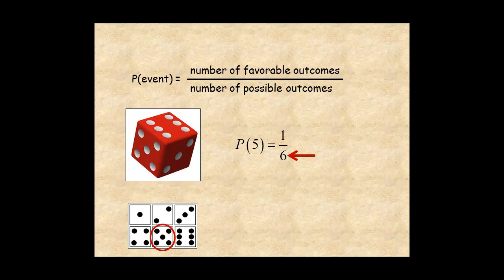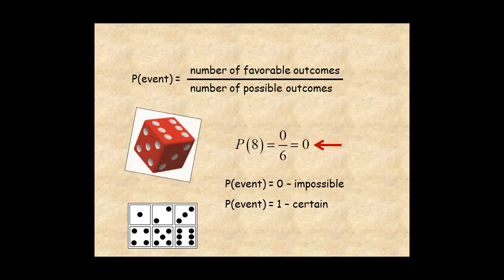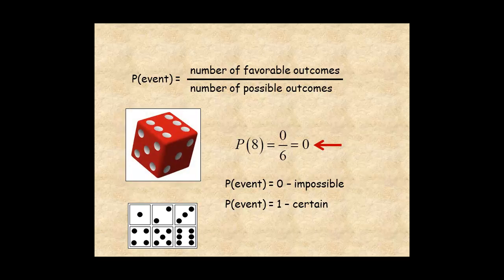The probability of an event is a number between 0 and 1. 0 means the event is impossible. For example, the probability of rolling an 8 is 0. It's impossible because a dice doesn't have an 8.